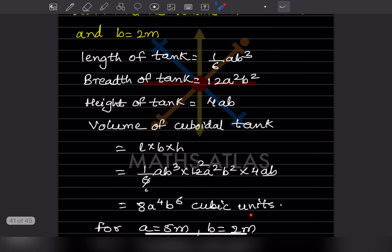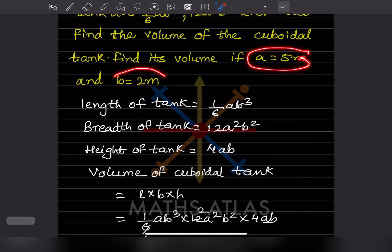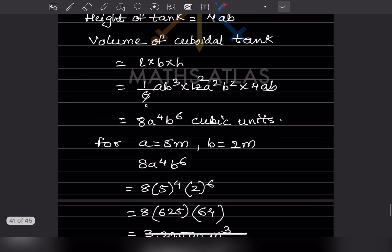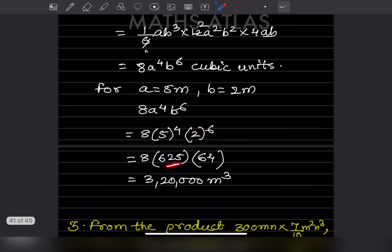Now substituting a = 5 metres and b = 2 metres into the volume expression 8a⁴b⁶: we compute 5⁴ = 625 and 2⁶ = 64. Multiplying 8 × 625 × 64 gives 3,200,000. Since the unit is metres, the volume is 3,200,000 cubic metres.